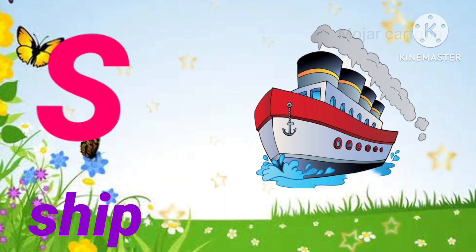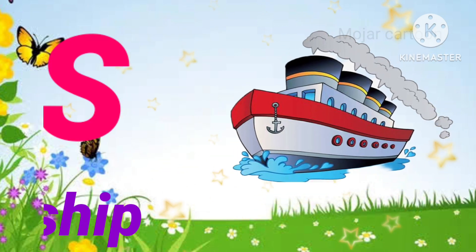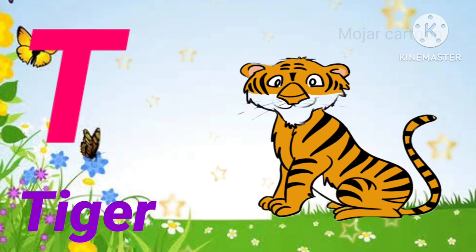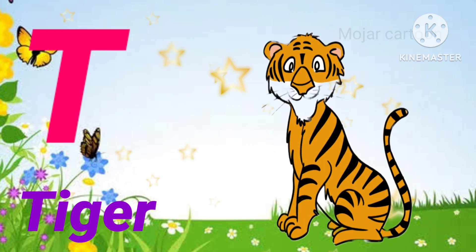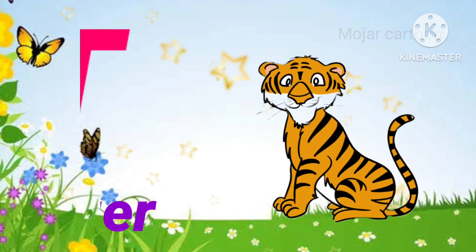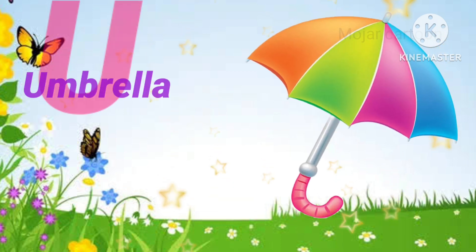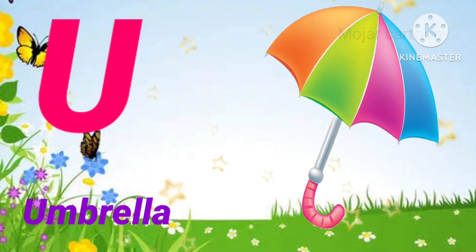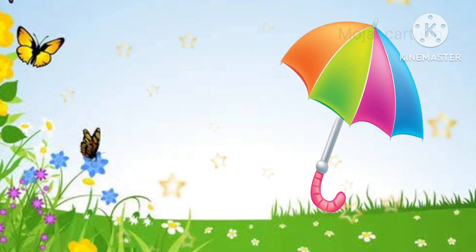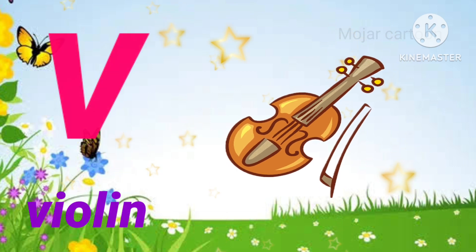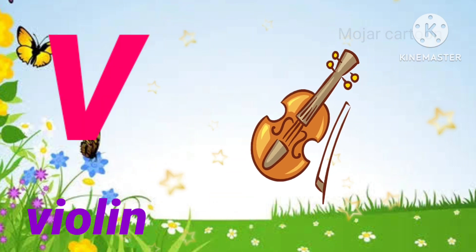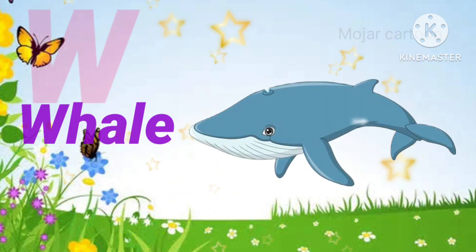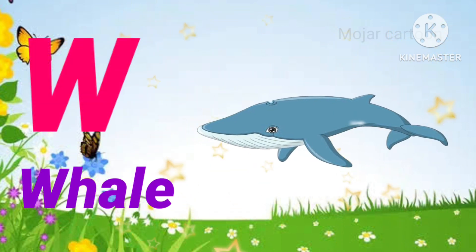S. S is for sheep. T. T is for tiger. U. U is for umbrella. V. V is for violin.